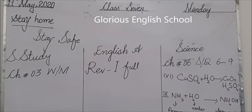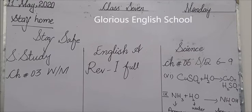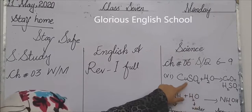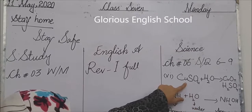Now I will explain the science diary. Open your science notes. Question number 6: what happens when a salt like copper sulfate reacts with water? This is the copper sulfate formula.